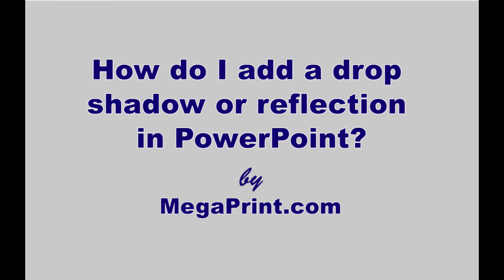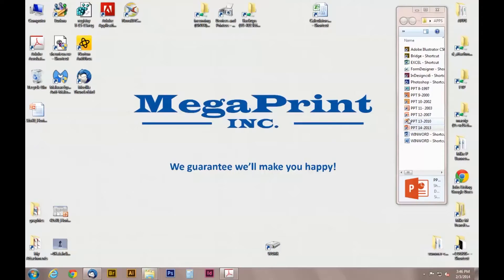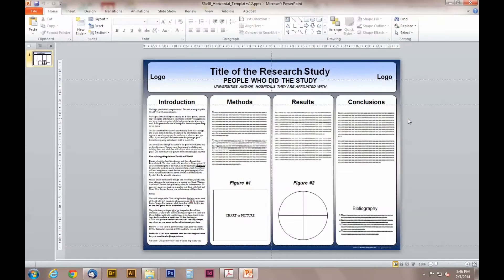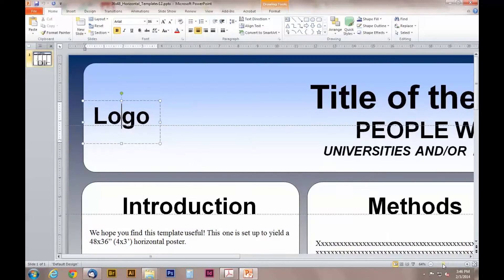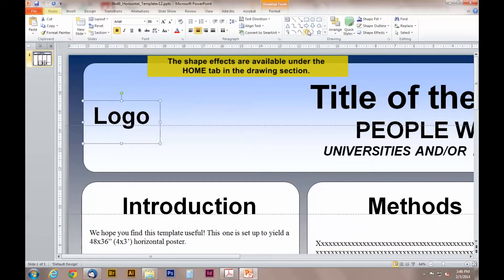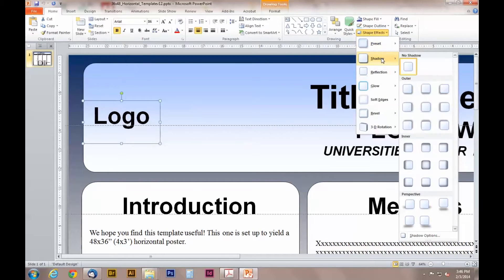In this video you will learn how to make drop shadows and reflections. You can place a drop shadow or reflection on a text or an object. In order to apply special effects you must select the text or object you would like to add the effect to. First I will show you how to add the effect to text.